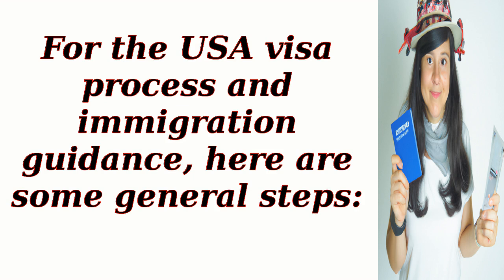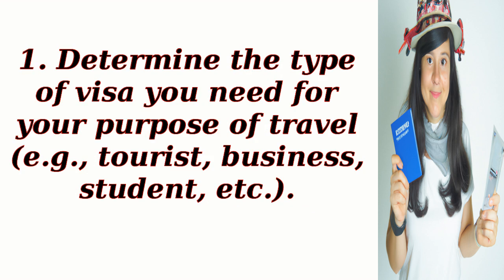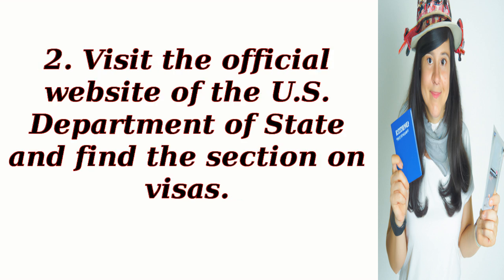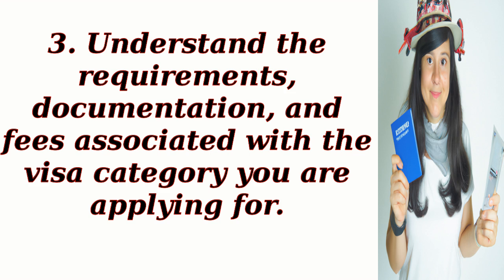For the USA visa process and immigration guidance, here are some general steps. 1. Determine the type of visa you need for your purpose of travel, e.g., tourist, business, student, etc. 2. Visit the official website of the U.S. Department of State and find the section on visas. 3. Understand the requirements, documentation, and fees associated with the visa category you are applying for.